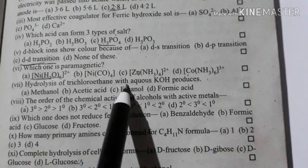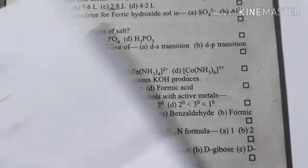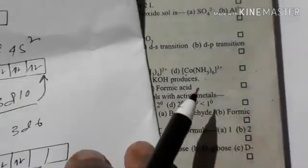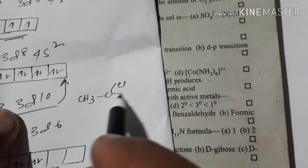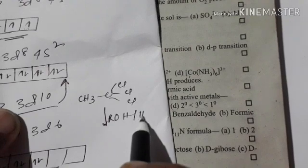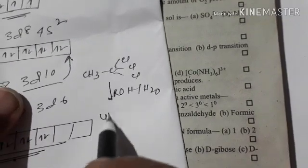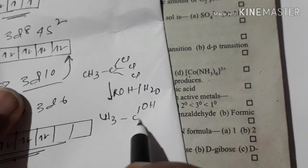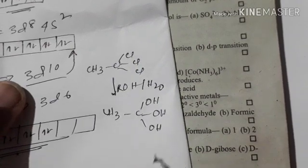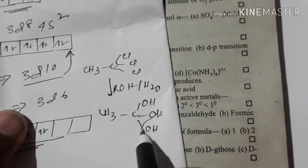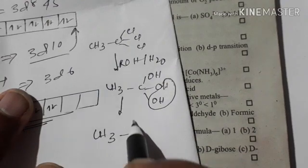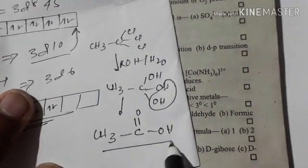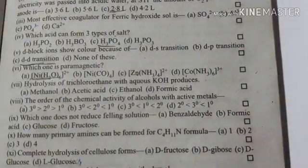Hydrolysis of trichloroethane with aqueous KOH: CH3CCl3 undergoes hydrolysis. First, substitution reaction with three Cl groups. The intermediate trichloroethanol will be very unstable. After elimination of water, it gives acetic acid.